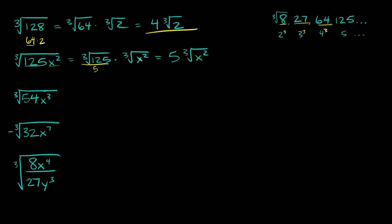The cube root of x squared — we can't break that down anymore, because the exponent has to be 3 or bigger in order to simplify a cube root. 2 is obviously less than 3, so that's why we can't break this down anymore. So your final answer would be 5 cube root of x squared.